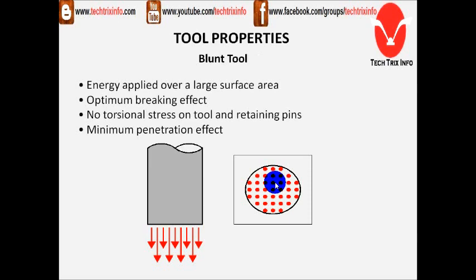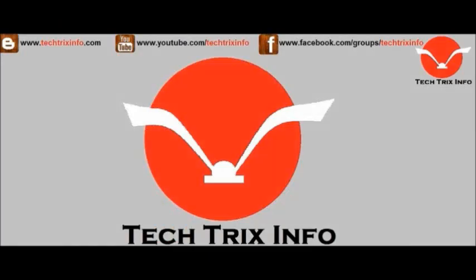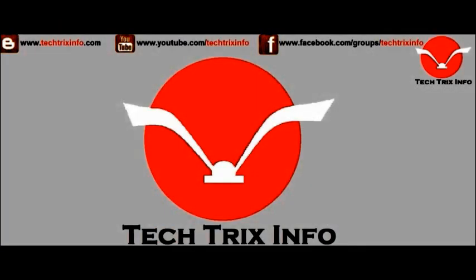The maximum contact surface area can be achieved with the help of a blunt tool. For more engineering tutorial video updates, please click the subscribe button on top of this video. If you found this tutorial useful, please click the like button or drop a comment to motivate us. Thanks for watching this video.